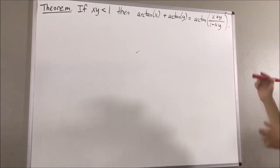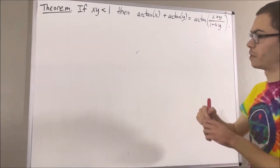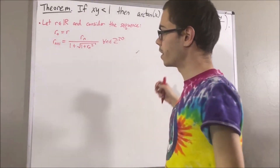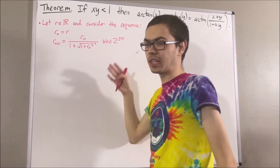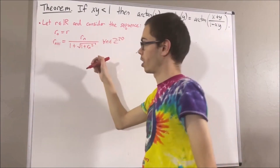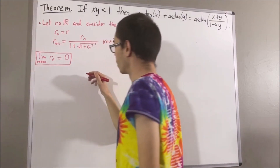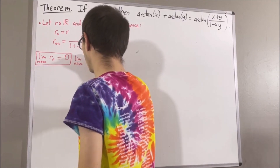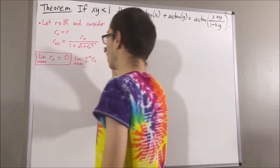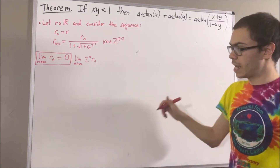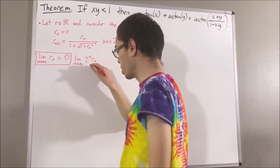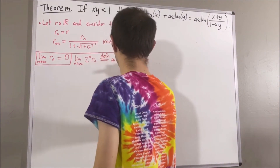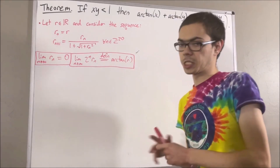Now first of all, let's remind ourselves of our definition of the arctangent function. We have shown that the limit of the sequence rn is equal to 0, and we have also shown that the sequence 2 to the n times rn converges. We define the value that this sequence converges to to be the arctangent of r. So this is our definition of the arctangent function.